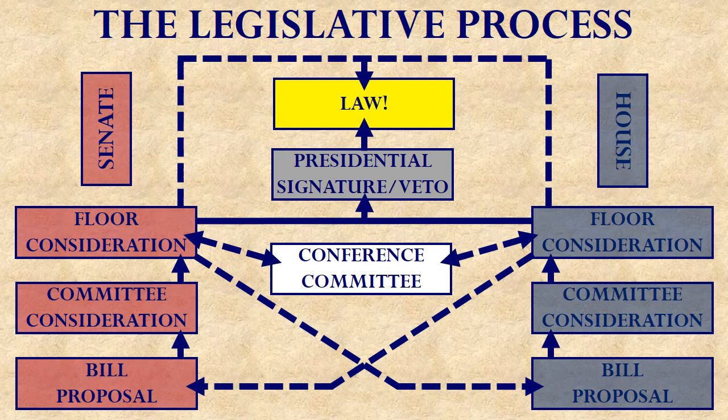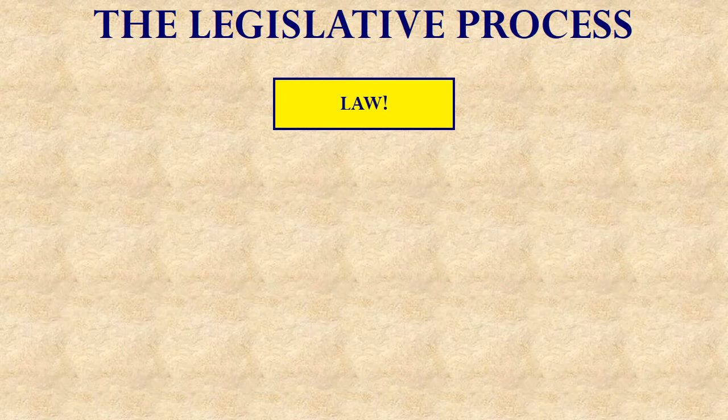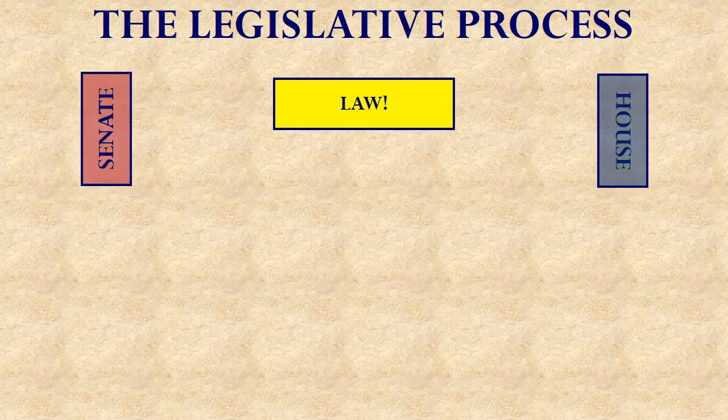In previous lessons, we've been working out this diagram of the legislative process. It looks very complicated, but we've been explaining it step by step. Please remember that the goal of this legislative process is to eventually create a law. To create that law, we have to get it approved by both the United States House and the United States Senate.